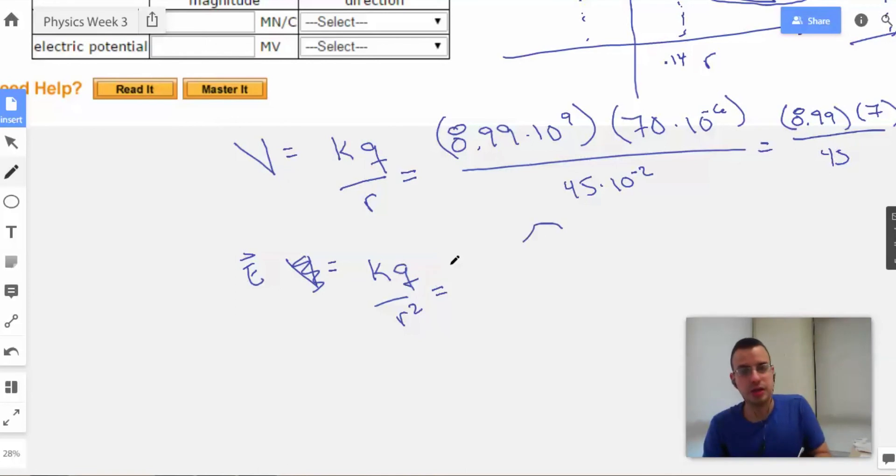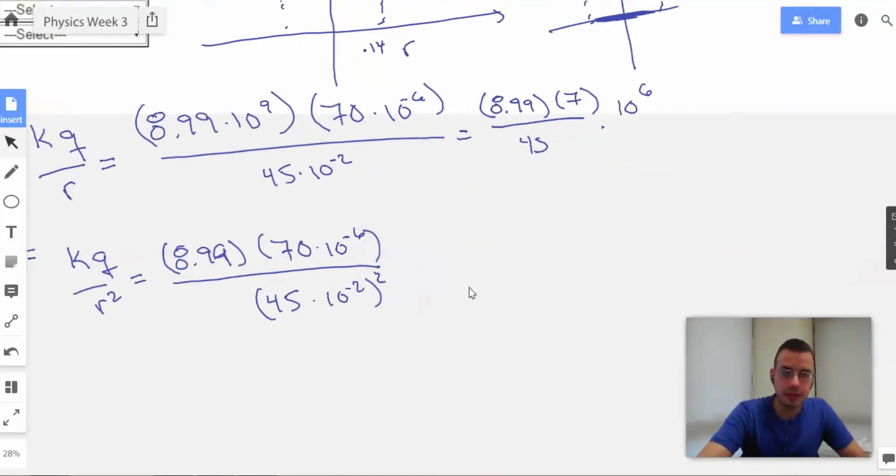Let's see here. 8.99 times 70 times 10 to the negative 6 over 45 times 10 to the negative 2 squared.